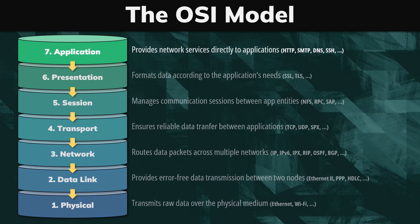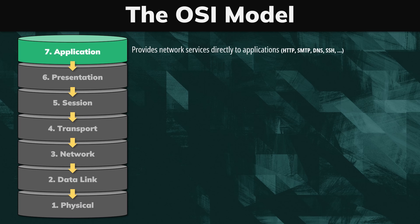The main advantages of layers are two. We can work in one layer without having too much knowledge about the rest. In fact, we can develop the HTTP protocol at layer seven without understanding anything about the transmission of data at the physical layer.